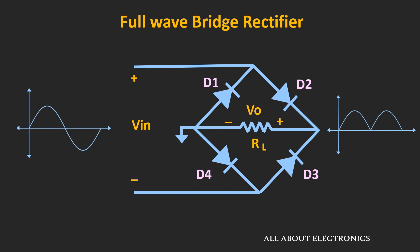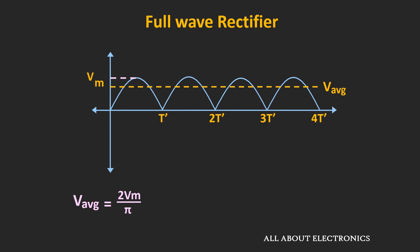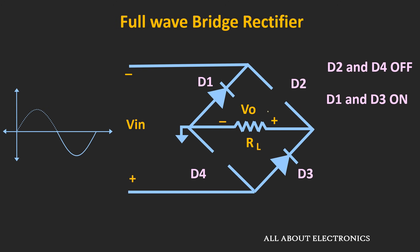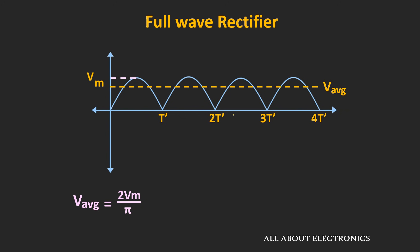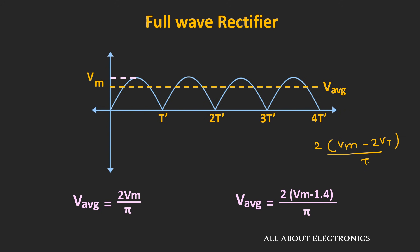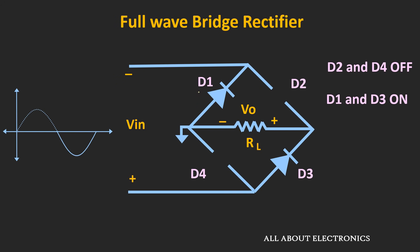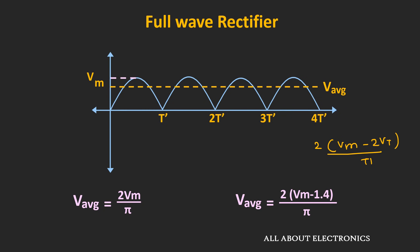If we consider these four diodes as non-ideal, the average value can be given by the expression 2(Vm − 1.4) divided by π. Or in general, the average value will be equal to 2(Vm − 2Vt) divided by π, where Vt is the forward voltage drop across each of the two conducting diodes. Here T' is the new time period of the output waveform, where T' is equal to T/2.